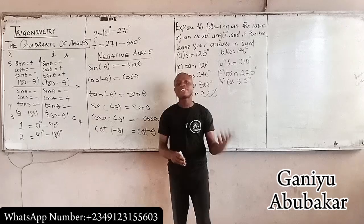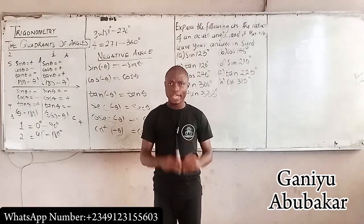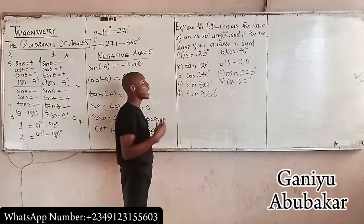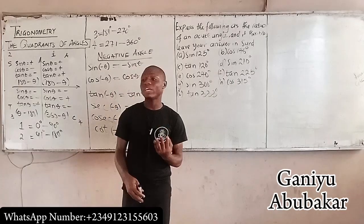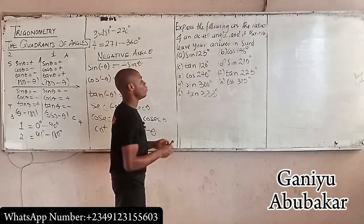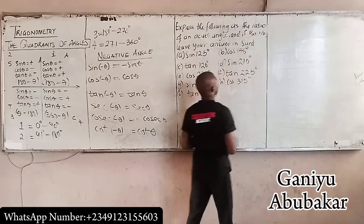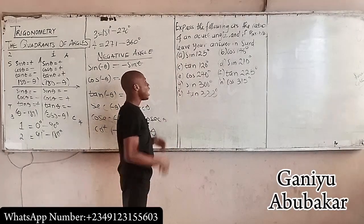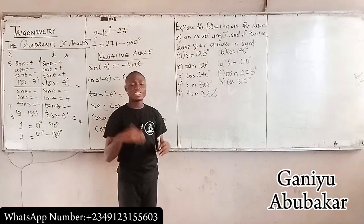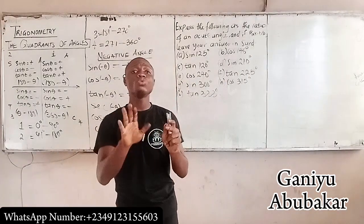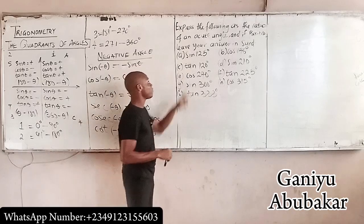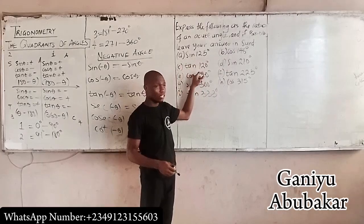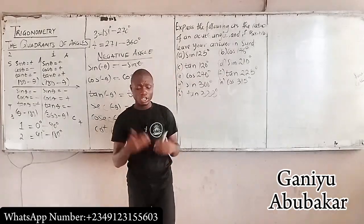Let's solve some problems. Express the following as a ratio of an acute angle — angles less than 90 degrees — and if possible, leave your answer in surd form. I will do parts a, b, and c, covering sine, cos, and tan respectively. You do the rest and leave your answers in the comment section below.